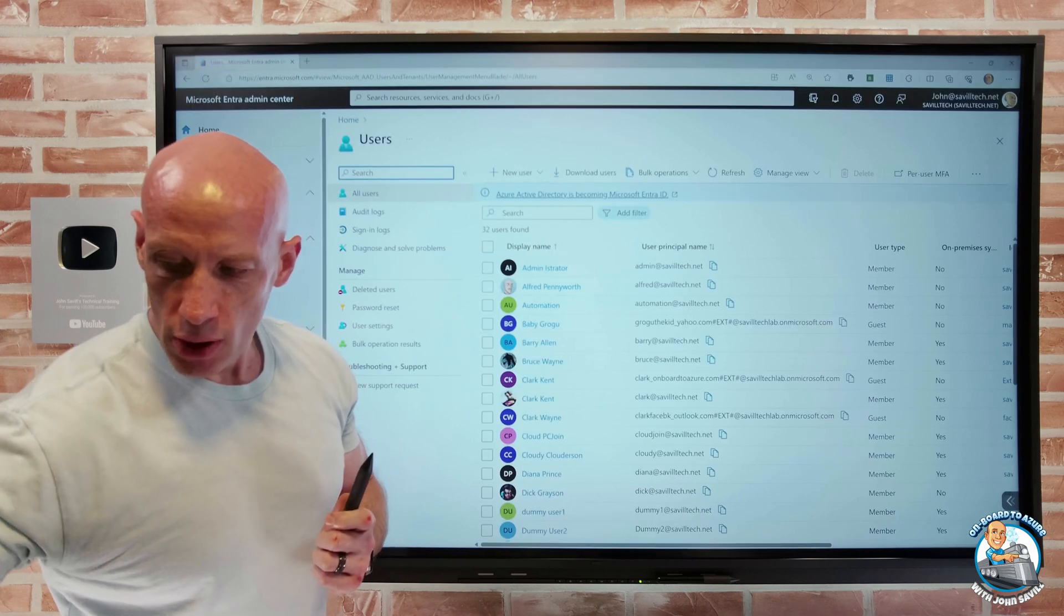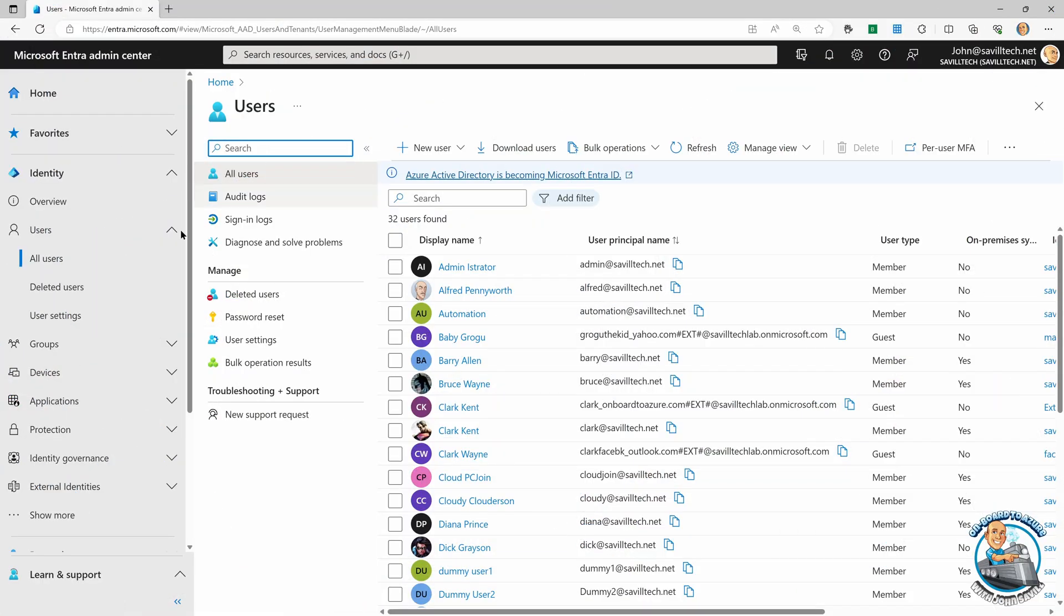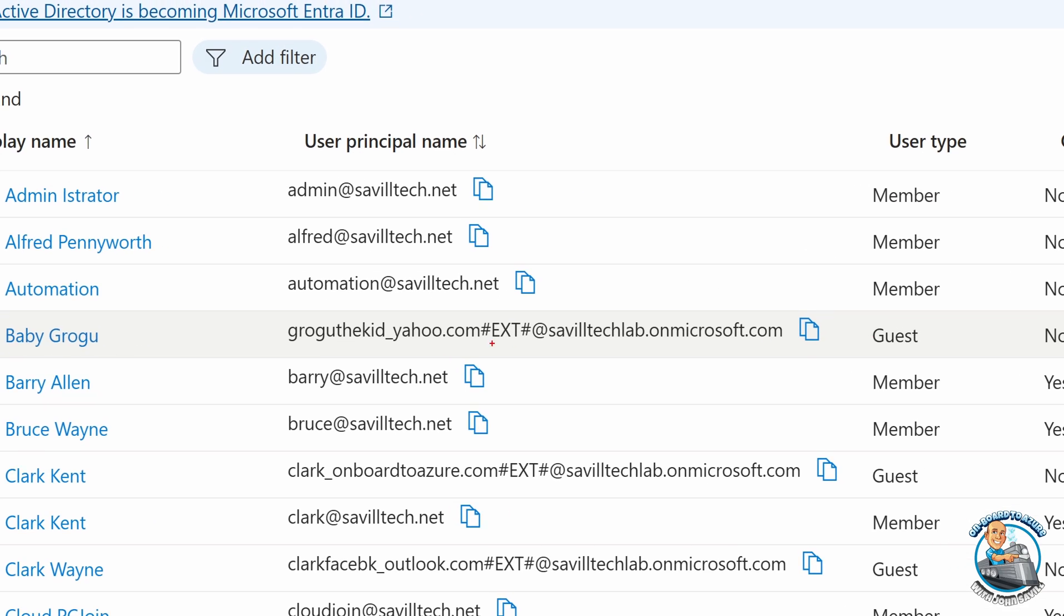If we jumped over really quickly, we can see this. If I was to go and look at all of my guests, you can see their UPN is always their original email. The at is turned to an underscore.